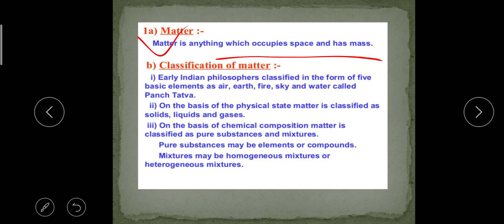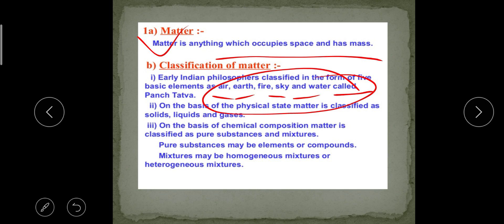In earlier times, human beings tried to understand their surroundings. Early Indian philosophers classified matter in the form of five basic elements called the Panch Tatwa — air, earth, fire, sky, and water. According to them, both living and non-living things were made up of these five elements. Ancient Greek philosophers also arrived at a similar classification of matter.